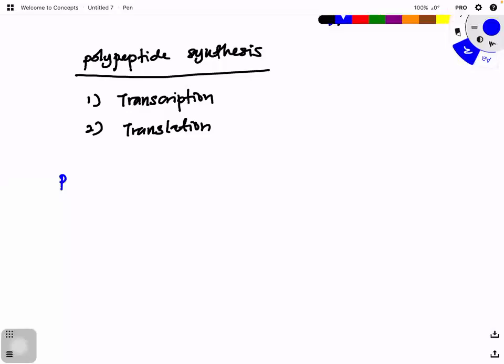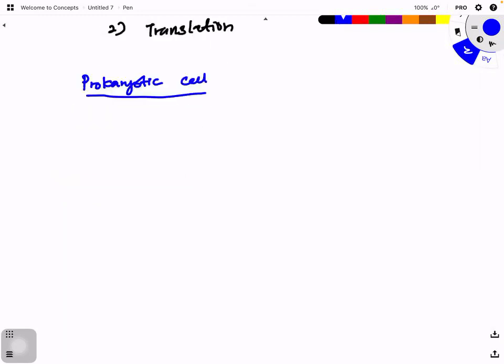So now we look at polypeptide synthesis - transcription and translation. We'll look at the prokaryotic cells first. You have to understand that for prokaryotic cells, when we draw out the cell wall, their DNA actually lies as circular DNA inside the cytoplasm. Can you see that circular DNA?